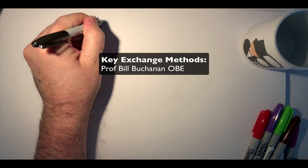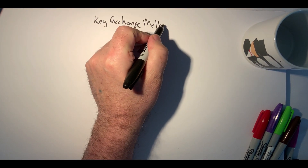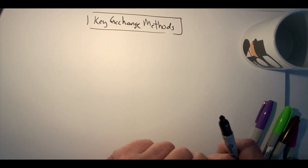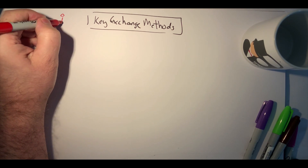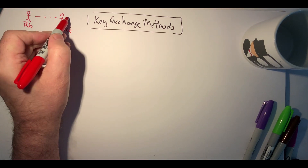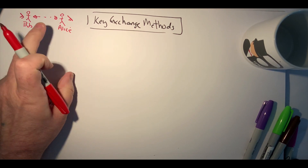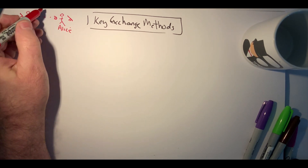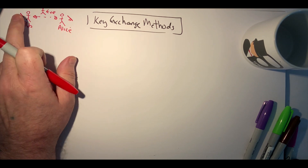Let's look at key exchange methods. What we want is to make sure that Bob and Alice can communicate using a shared key. It's likely they'll use symmetric key encryption, so what we want is for them to openly communicate even while Eve is listening, and for them to end up with the same shared key.